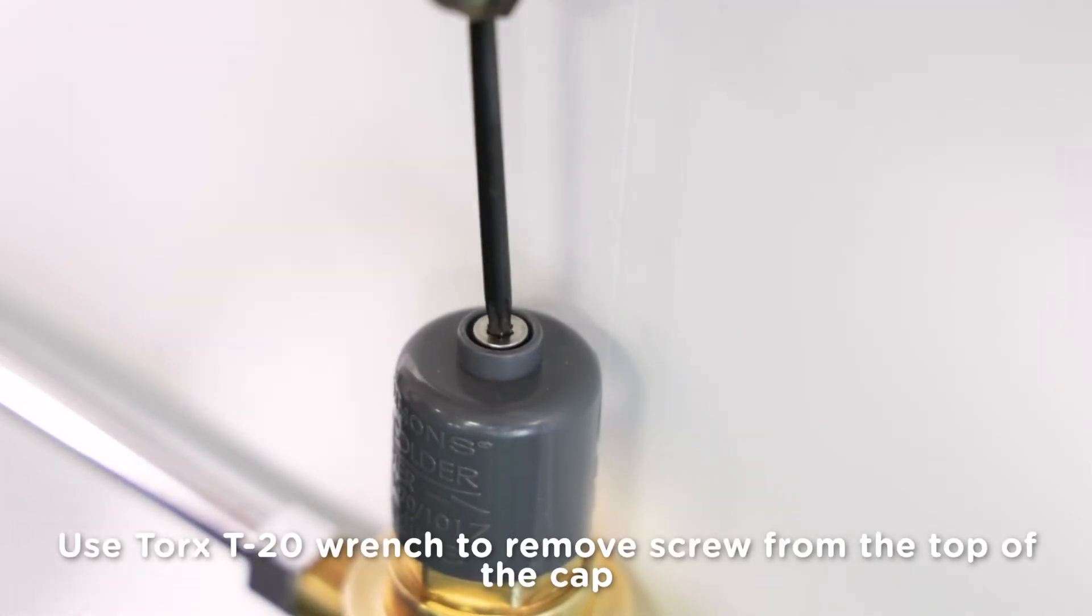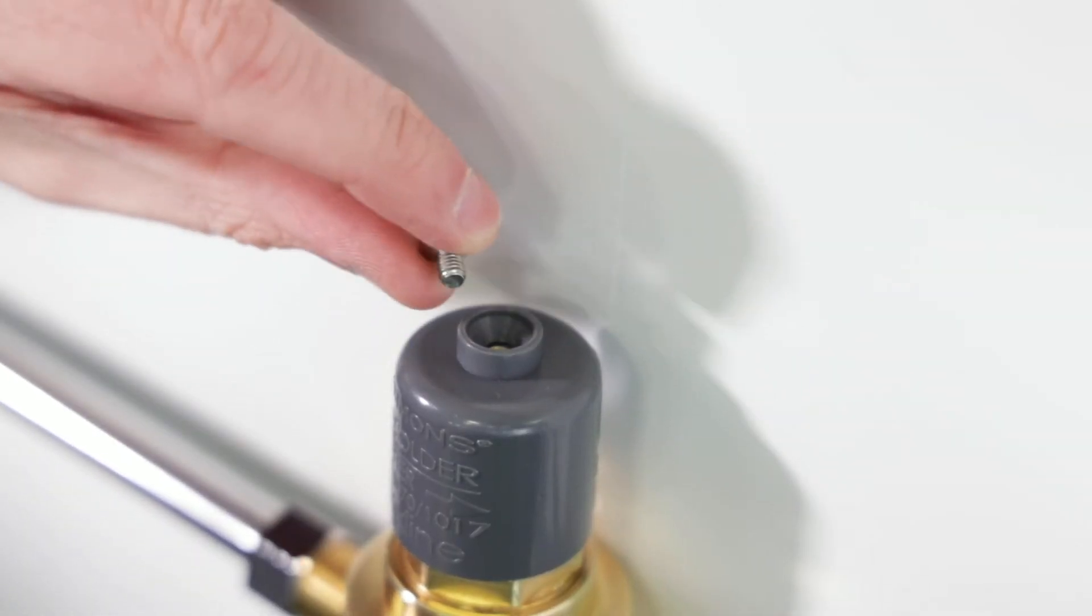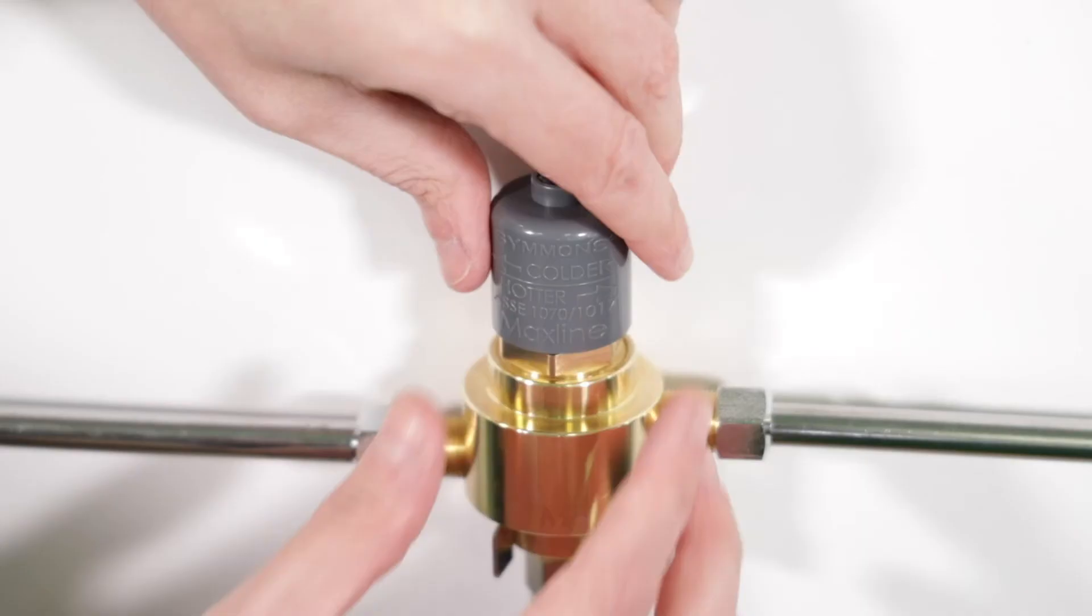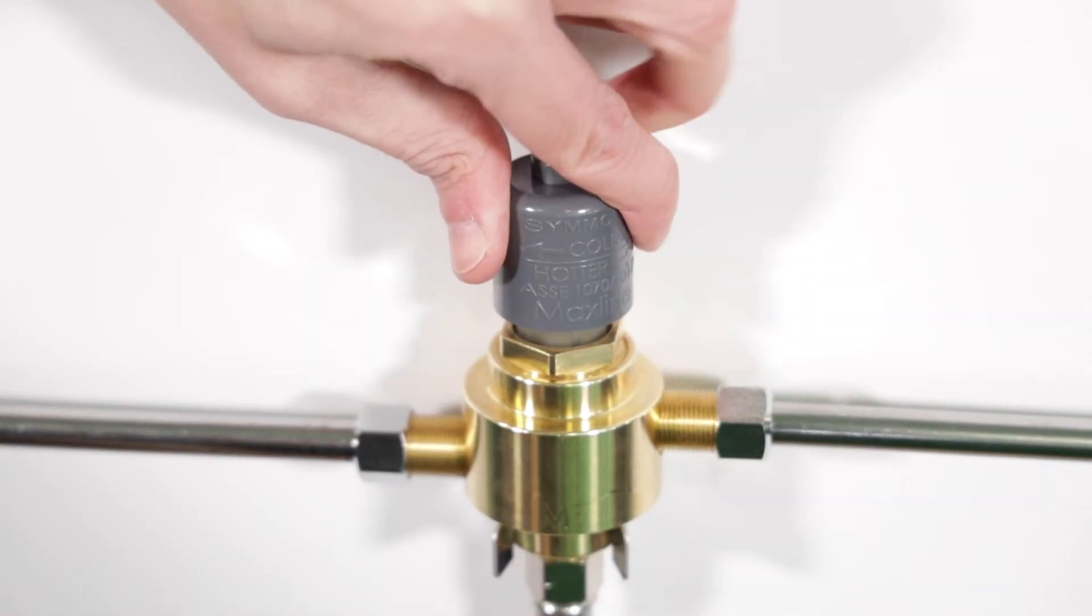First, use a Torx T20 wrench to remove the screw from the top of the gray adjustment cap and set it aside in a safe place. The cap itself is used to adjust the temperature by turning the cartridge until the preferred temperature is reached.